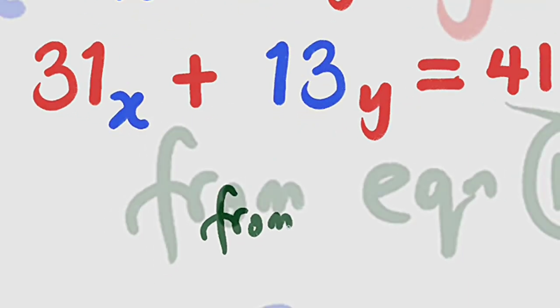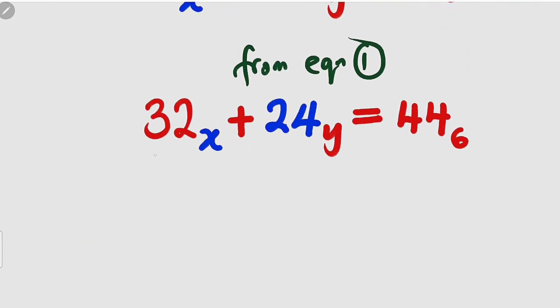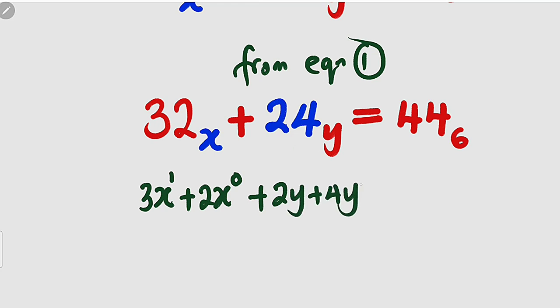From equation 1, to convert each term into base 10, let me start with the first term. We take 3 and multiply by the base which is x. Plus we take 2, we multiply by the base and assign index 0, 1. Then we move to the next term. Plus, take 2, you multiply by y. 2 times y is 2y. Then plus 4 times y. You assign index 0 and 1.